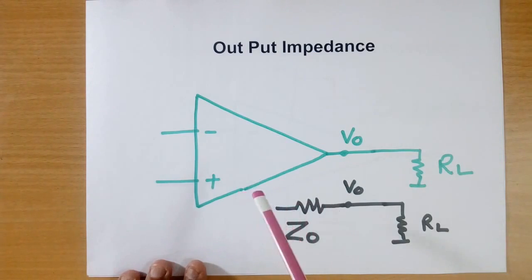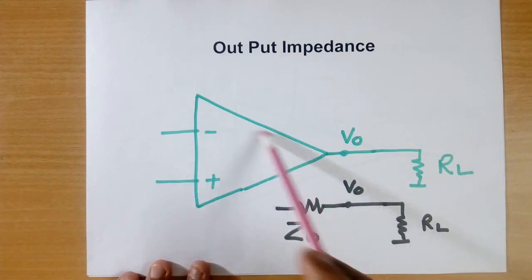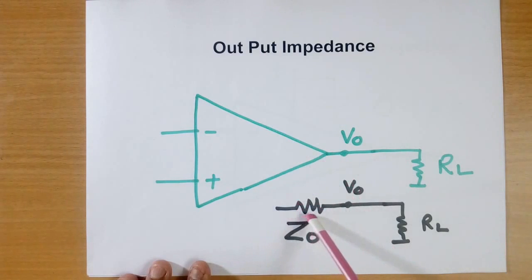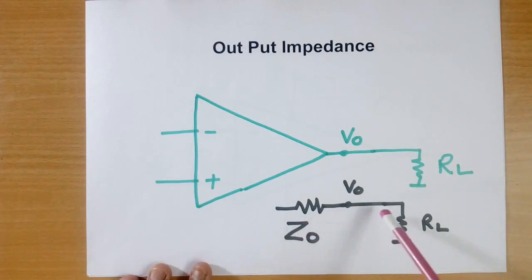Output impedance. This IC output is not perfectly regulated. It has some equivalent output resistance which is called Z0. When you connect a load, because of this resistance, when current flows, a drop happens, and output becomes unregulated depending on the value of load. Here the drop will be there.